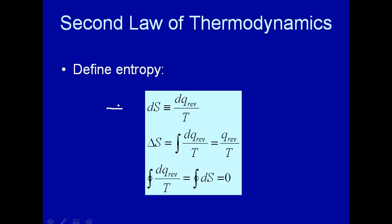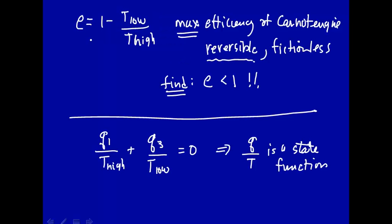Let's define that state function, Q over T, as entropy. We'll use the symbol S for entropy. dS, we're going to define as dQ reversible—that's important—over temperature. Why reversible? We're generalizing from the Carnot cycle, which had reversible processes, reversible steps in it. The heat transferred in a reversible process divided by the temperature is equal to what we're going to find as entropy, given the symbol capital S.